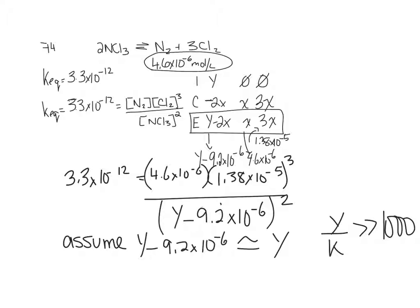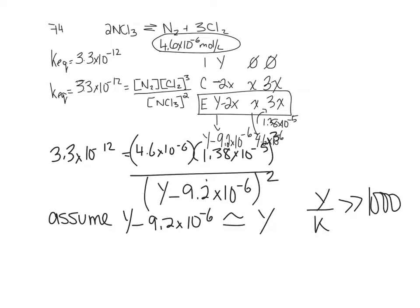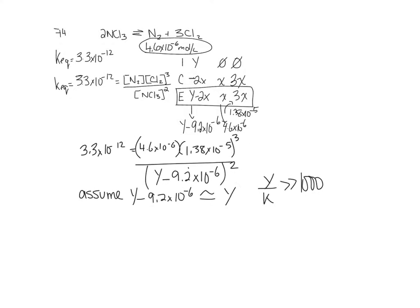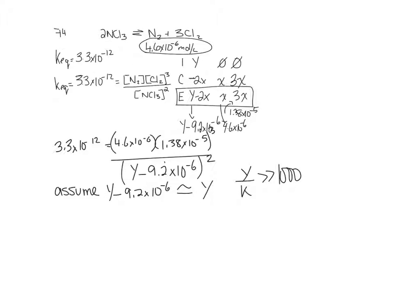If you did it in a method like let's say you didn't make the assumption, you could do all the work. You will get the right answer, but it's a whole lot of work. Okay, so that makes our life a little less complicated. So now you've got 3.3 times 10 to the negative 12 equal to some really small number on the top over Y squared.